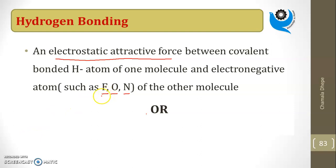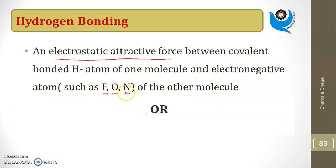Till now we have seen the electrovalent bond or ionic bond, covalent bond, coordinate bond, and metallic bond. Today we are going to start the hydrogen bond. Hydrogen bonding is an electrostatic attractive force between a covalently bonded hydrogen atom of one molecule and an electronegative atom such as fluorine, oxygen, and nitrogen of another molecule.